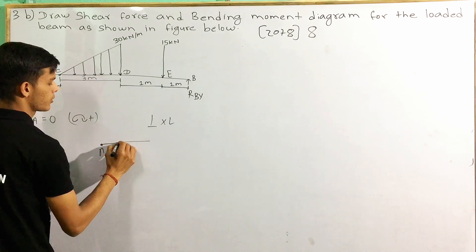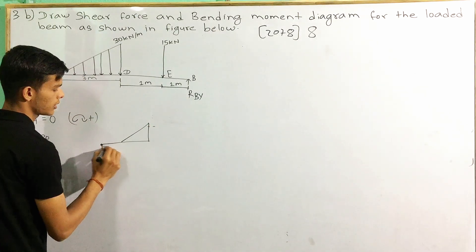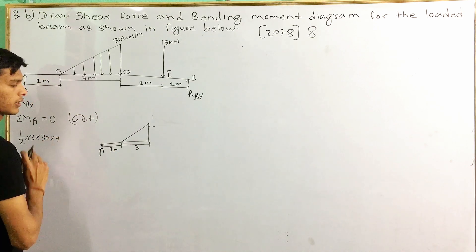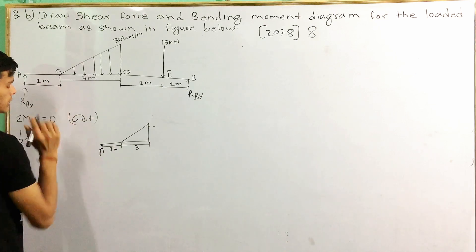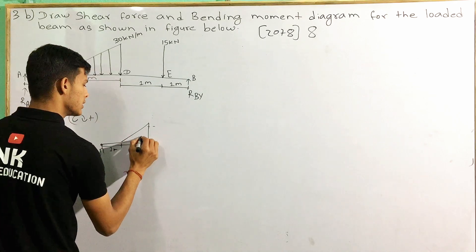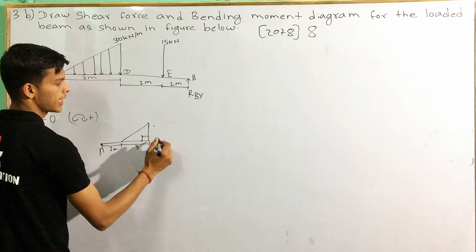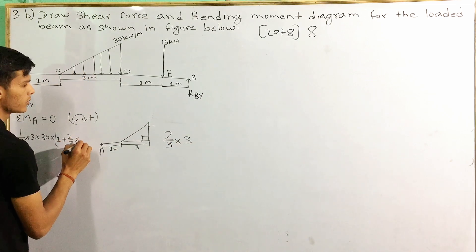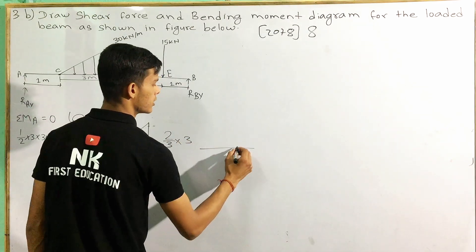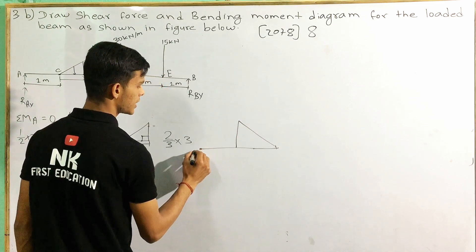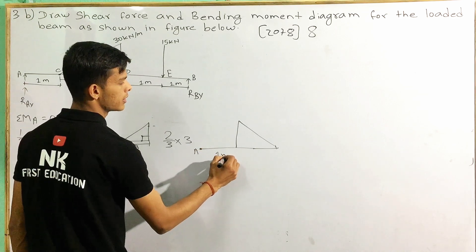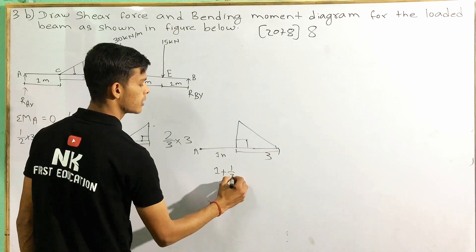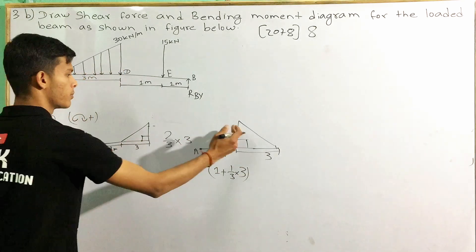This is a triangle. This distance is 1 meter, this distance is 3 meters, this distance is 4. This distance is 1 meter plus 2 by 3 into the total distance. This distance is 2 by 3 into 3, which is 2 meters. The remaining distance is 1 by 3 into 3, equal to 1 meter.